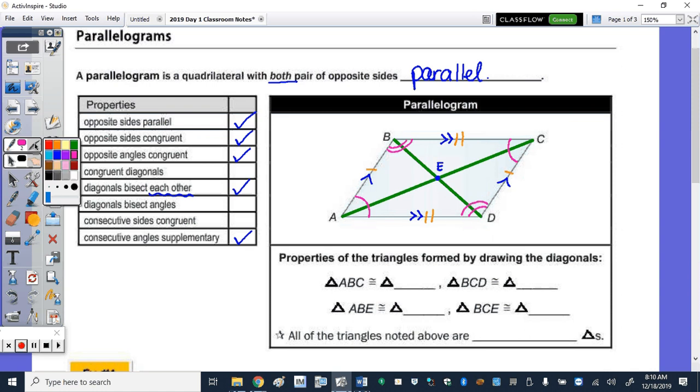The diagonals bisect each other, so that means that B to E is congruent to E to D, and A to E is congruent to CD.